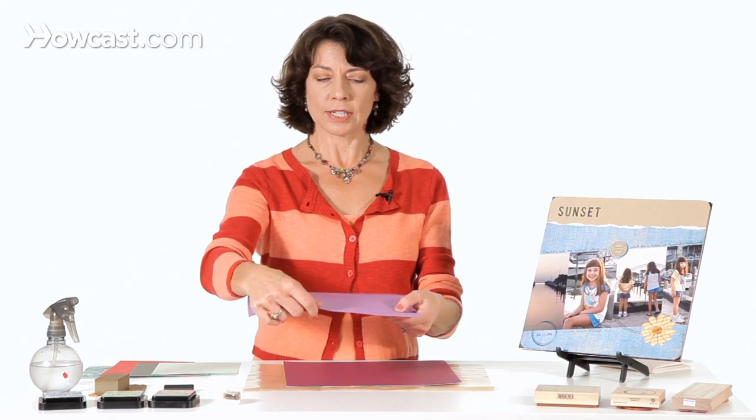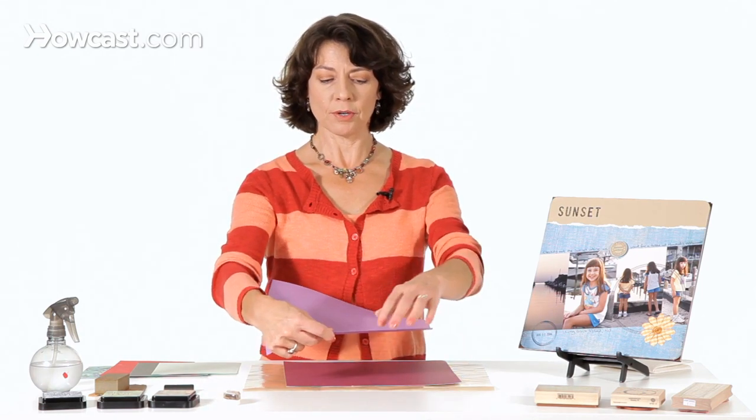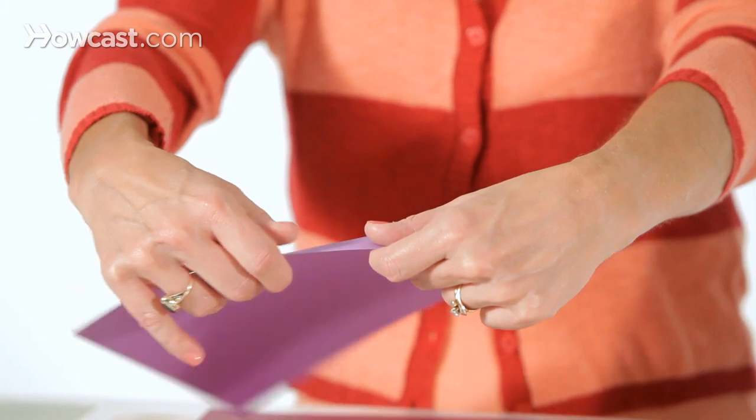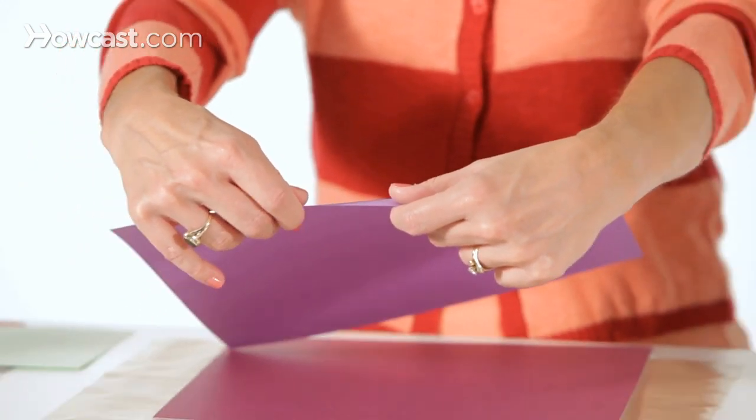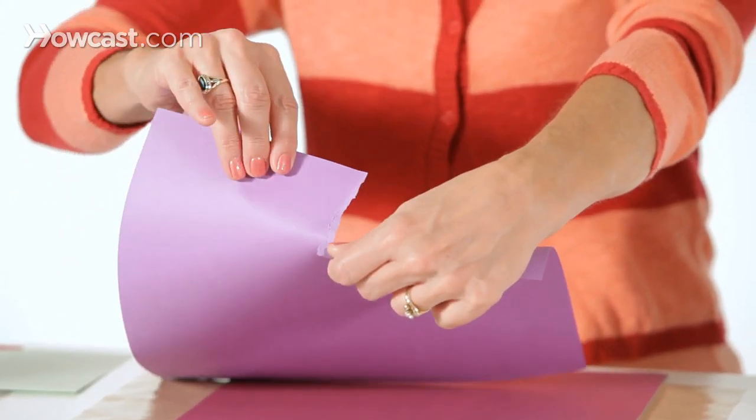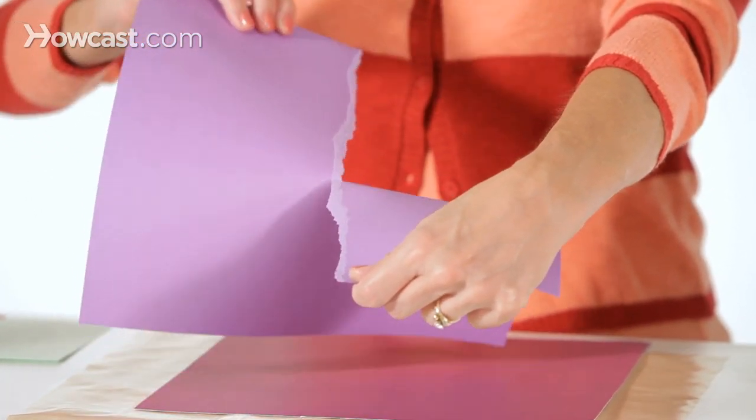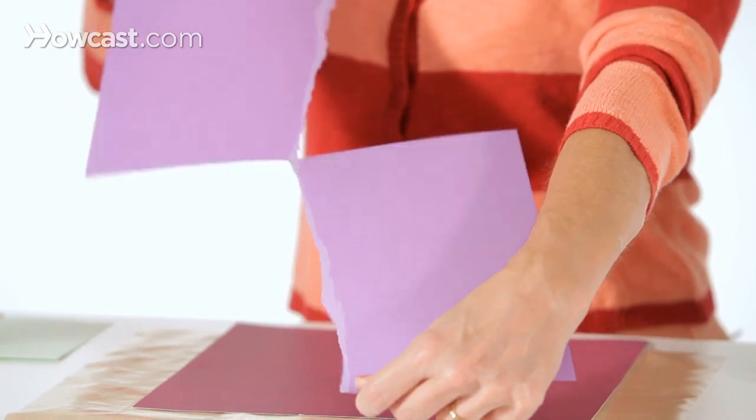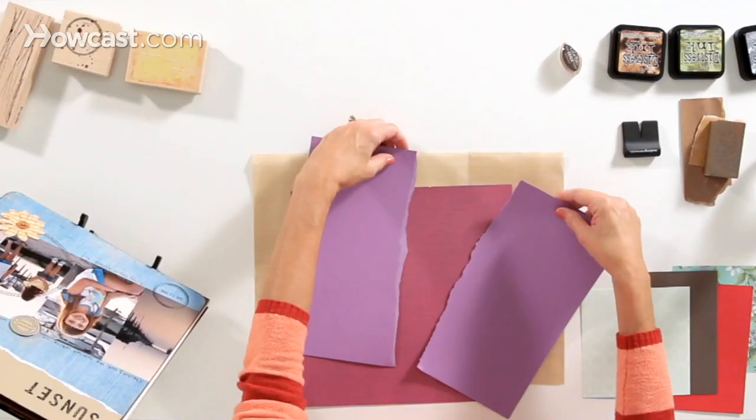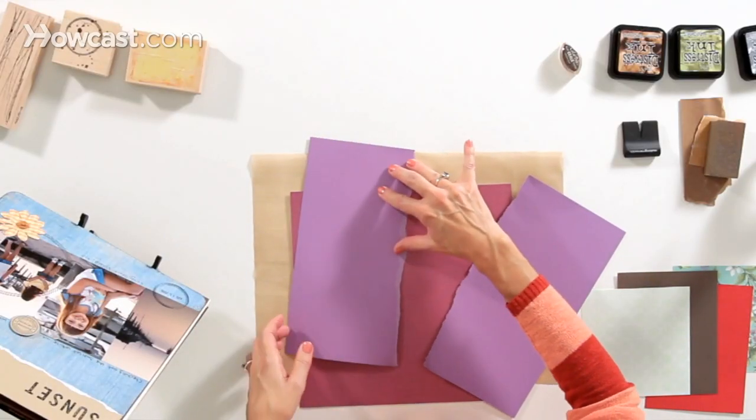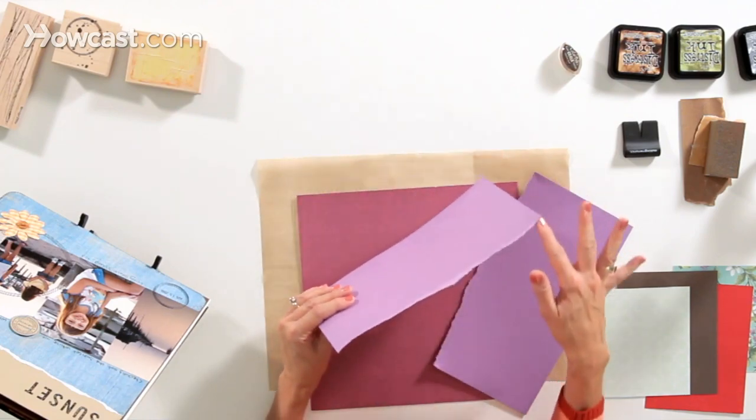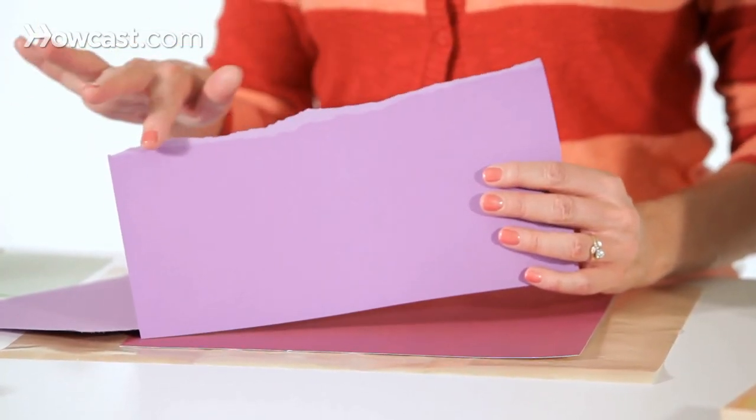And so to tear the paper, you want to hold it away from you. Hold it in your left hand, and then with your right hand, pull toward you. So like this. And what you get is this nice, beautiful, ragged edge. And you get to see some of that inside of the cardstock inside that torn edge.